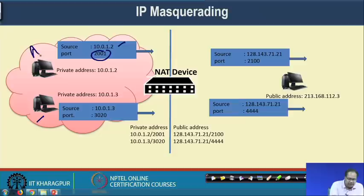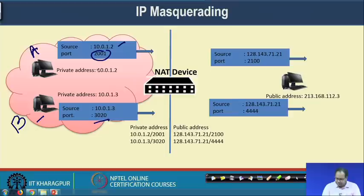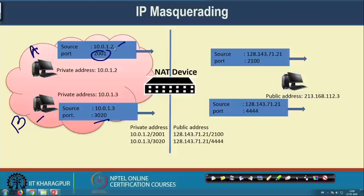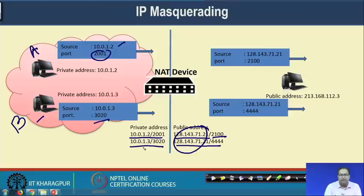For example, assume one application is running on machine A at port 2001, with a private IP of 10.0.1.2. There is another machine B using private address 10.0.1.3 with an application running at port 3020. Whenever these packets go outside trying to communicate to some public machine, the NAT device makes a mapping of this IP-port to another IP-port. This private IP and port number is mapped to a public address and one port; the second private IP and port is mapped to another public IP and port. You can use the same public IP for multiple machines because the port number makes the differentiation.